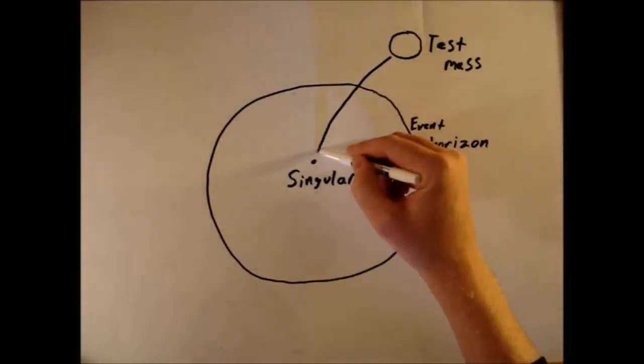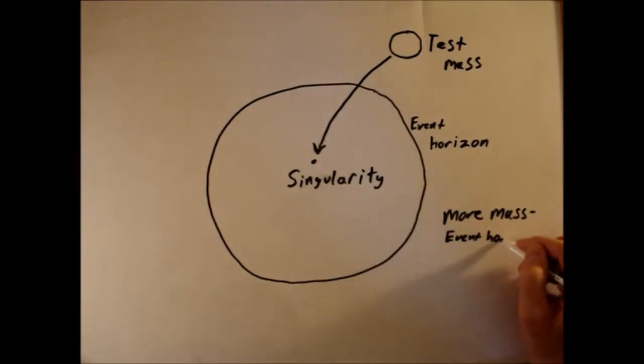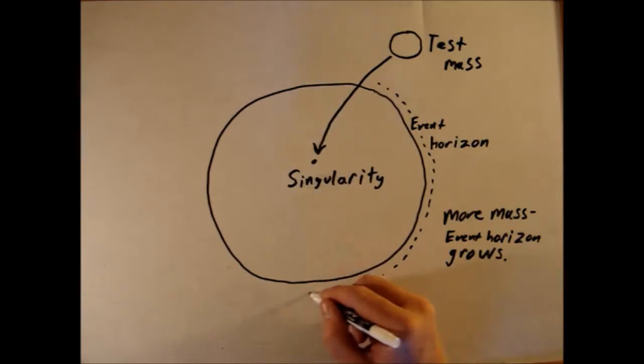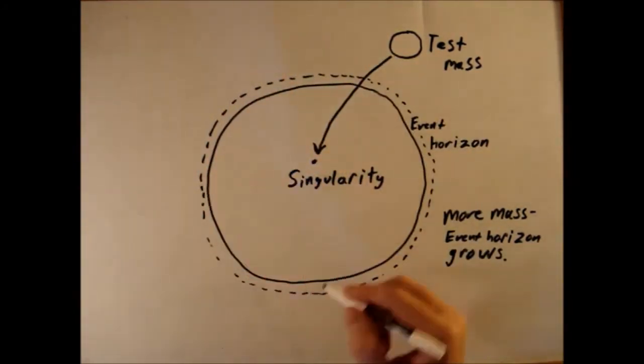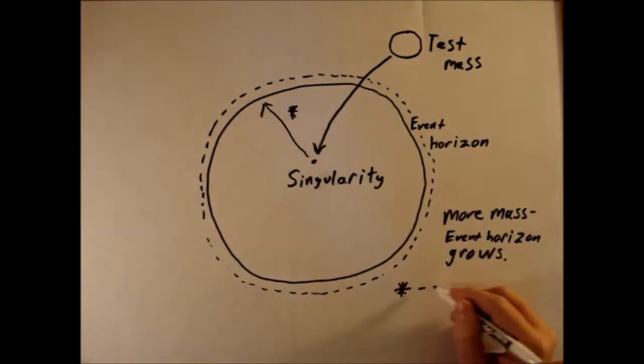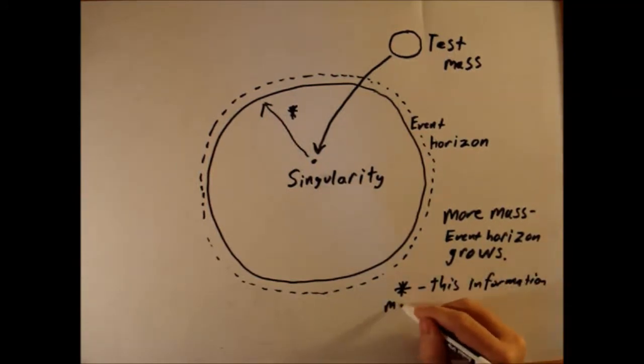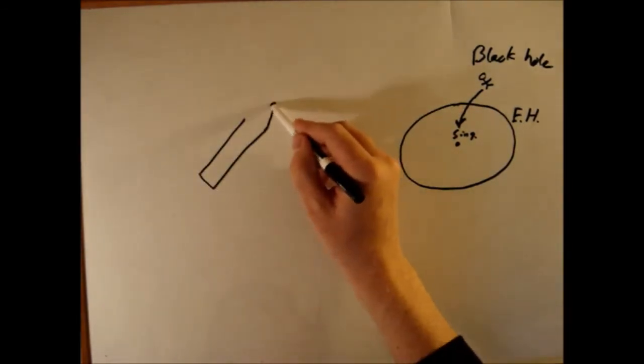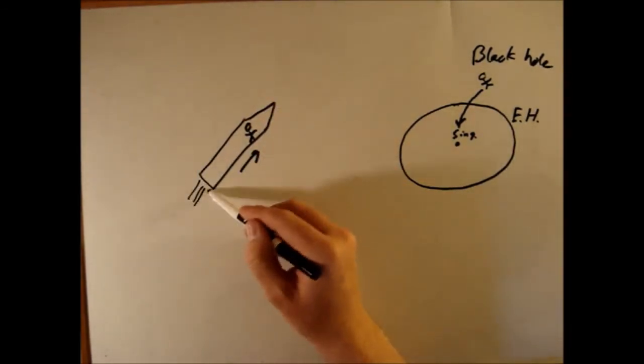Supposedly, a black hole will grow bigger when mass is thrown into it. The event horizon will thus take up more space. The information of the mass going into the black hole has to travel to the event horizon to tell it to get bigger. But the information can't do that because it has to move faster than the speed of light to get there. So how can anything cross the event horizon if information of its crossing can't get to the event horizon to make it bigger? That's the paradox.